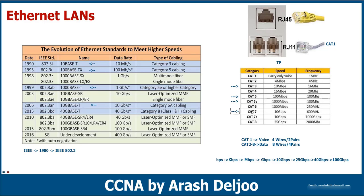Cat 6a means advanced or enhanced Cat 6. After 2015, with IEEE 802.3bq, we have the option of using Cat 8 in Class 1 and Class 2 cabling with up to 40 gigabit per second. Cat 8 is rated at 25 gigabit per second but the real speed is up to 40 gigabit per second. So from 1919 to 2015, we went from 10 megabit per second all the way to 40 gigabit per second.